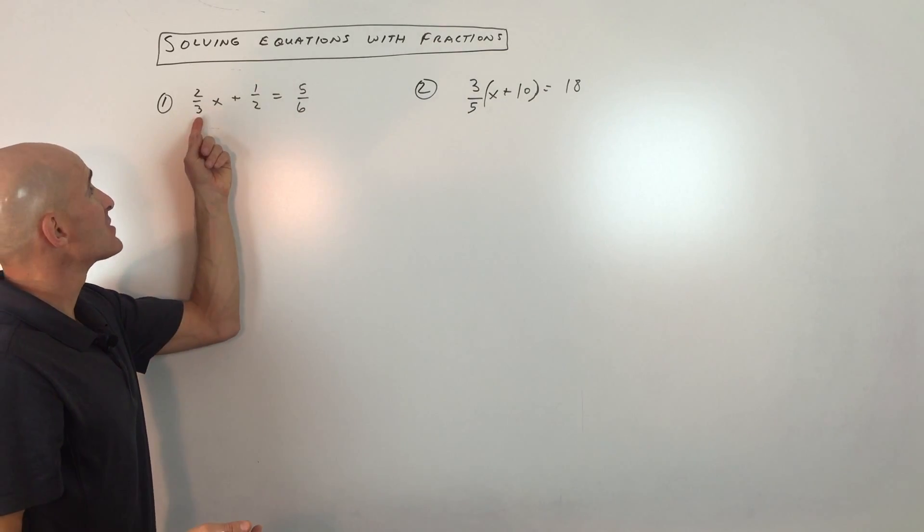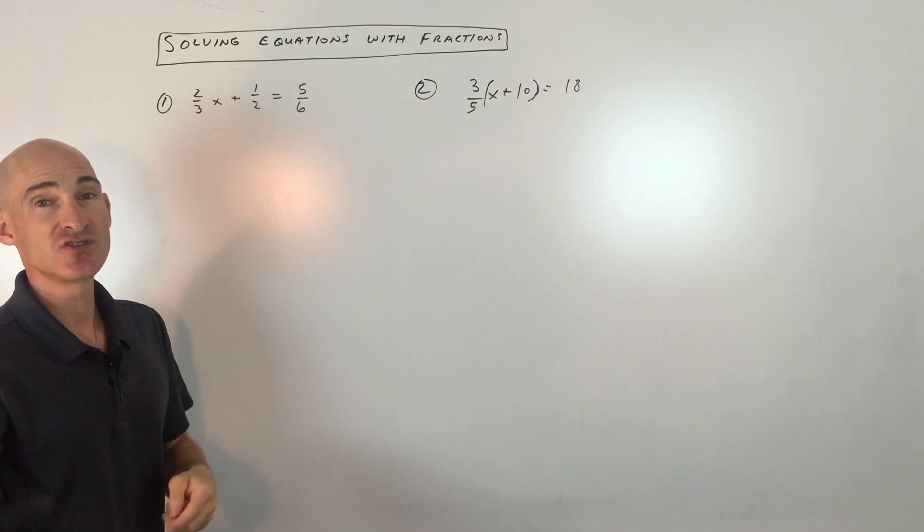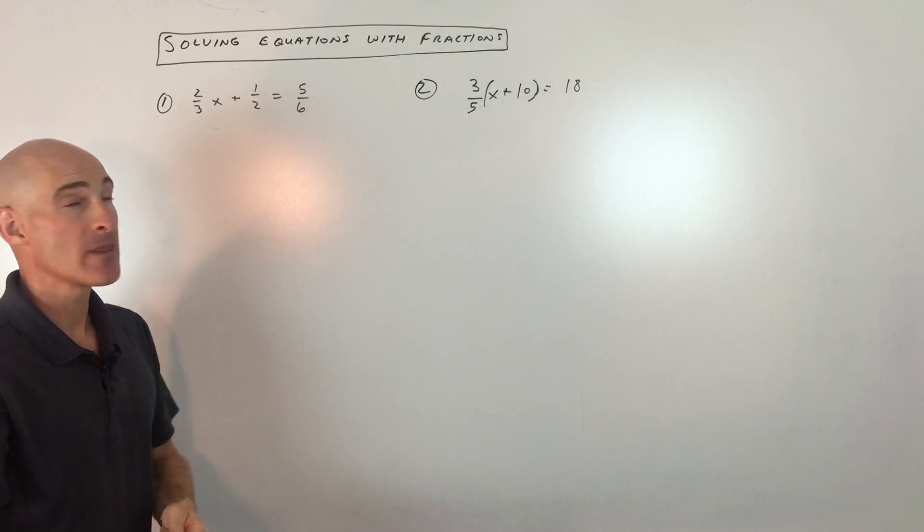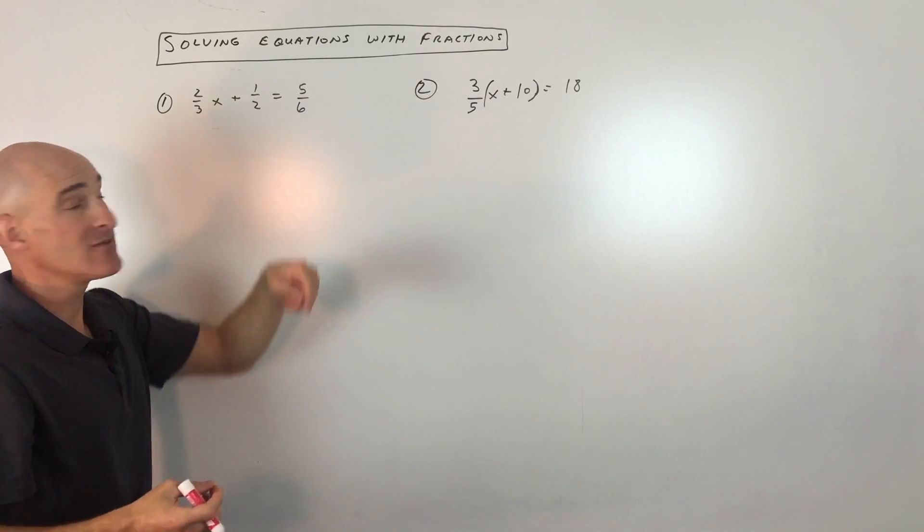Another way to say that is what's the smallest number that 3 goes into, 2 goes into, and 6 goes into evenly without a remainder? So you can see they all go into 6 evenly, and that's the smallest number that they'll all divide into evenly.